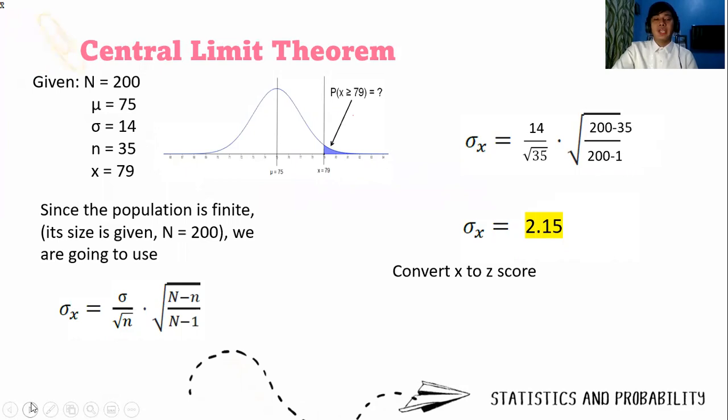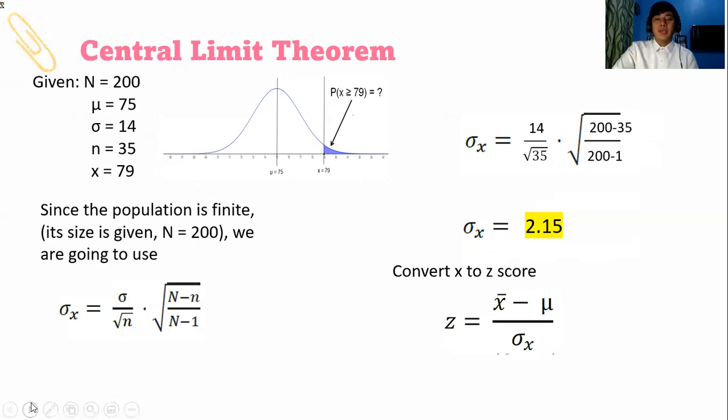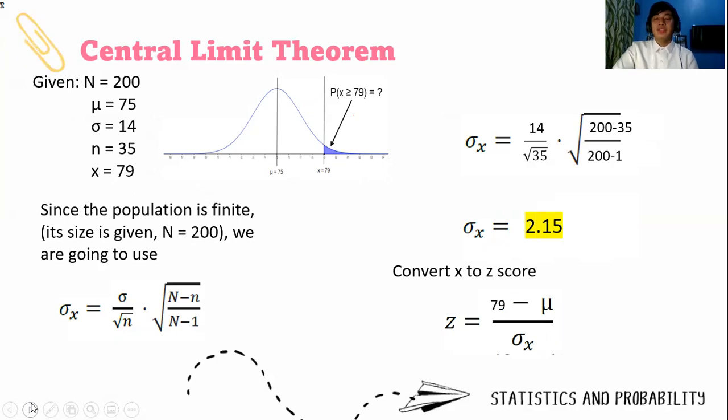Next, we convert the x to a z-score using this formula: z equals x̄ minus μ over σ sub x̄. So we have 79 minus 75 over 2.15.